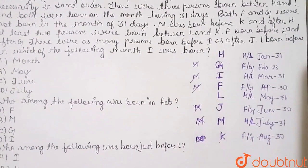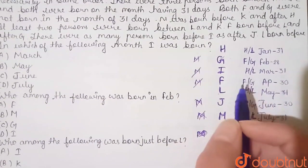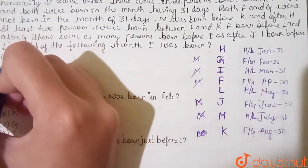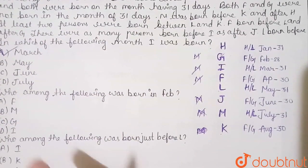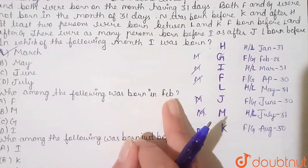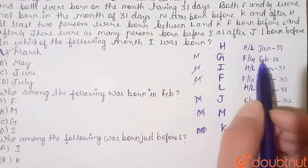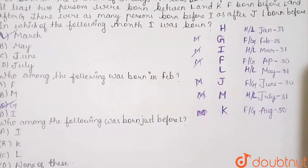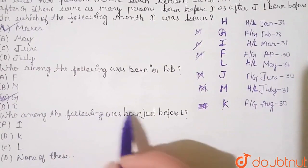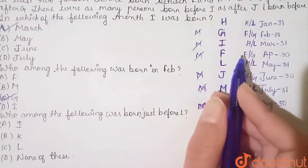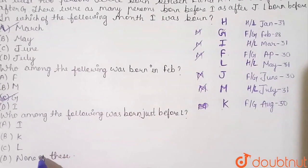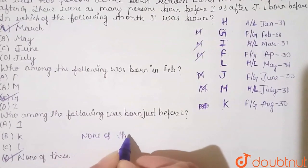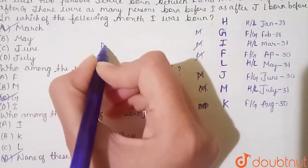Question: in which of the following months was I born? The answer is March. Second question: who among the following was born in February? The correct answer is G. Third question: who among the following was born just before L? Since F is born just before L but F is not among the options, the correct answer is none of these.